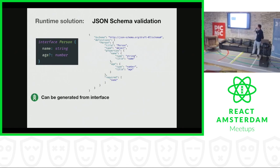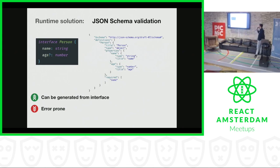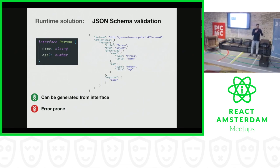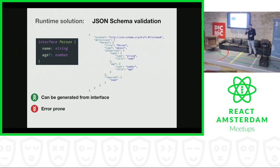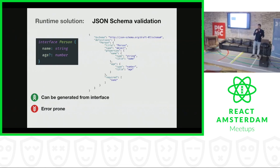What's nice about JSON schema validation is that there are tools to generate your JSON schema from your interface. But what's not so nice is that I might want to change the interface, take out the name property, but forget to regenerate my JSON schema from the interface and it will still work — I'll still validate my JSON, but against the wrong properties because I'm still checking if a name is actually inside the JSON payload.